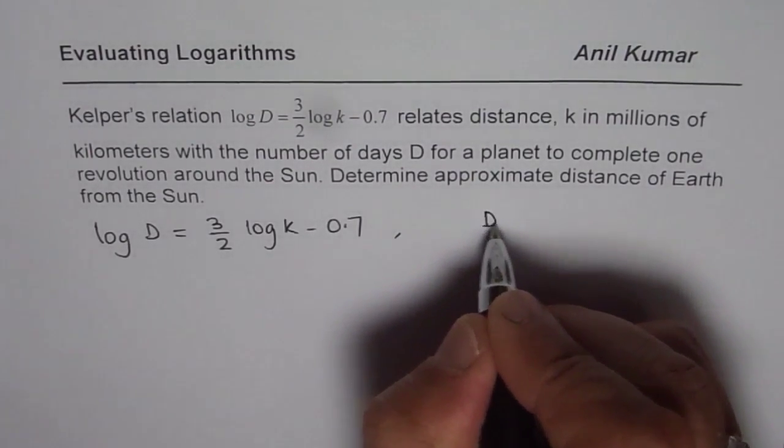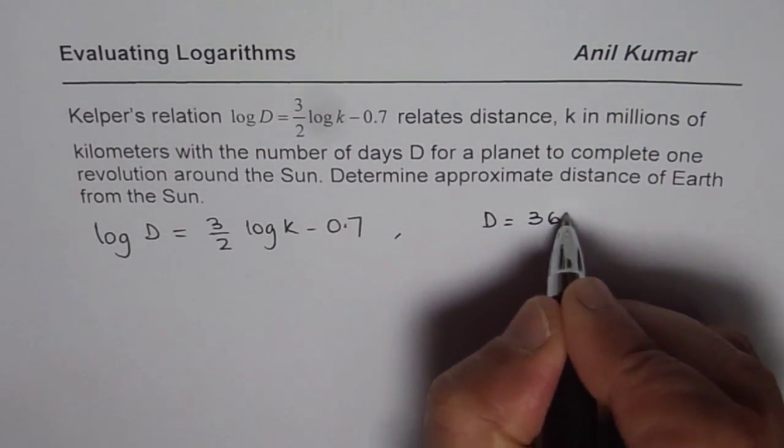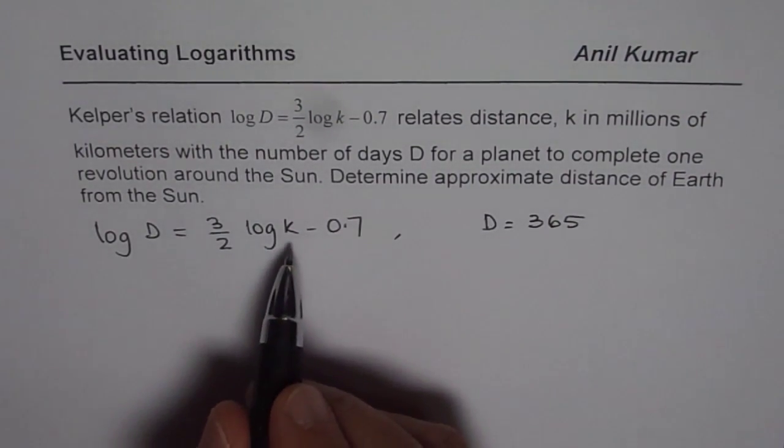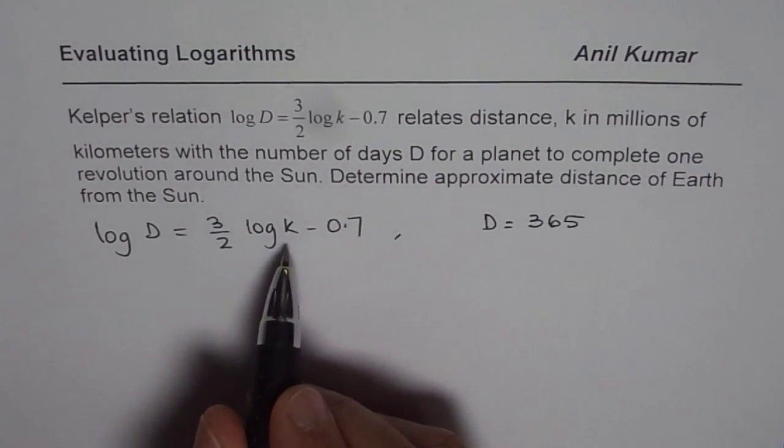Now since we know that D equals 365, we can substitute D as 365 in this equation and then calculate the distance of Earth from sun.